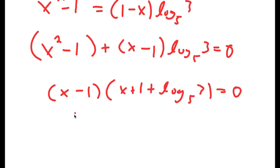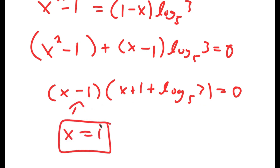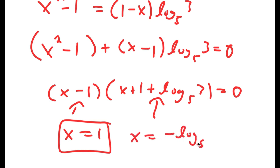This gets me to x minus 1 times x plus 1 plus log base 5 of 3 is equal to 0. Meaning x minus 1 equals 0, so x is equal to 1. And solving the other factor gives x is equal to negative log base 5 of 15.